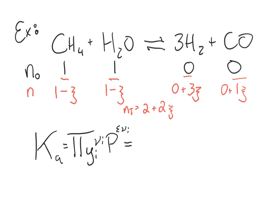So it's all of the y's raised to their stoichiometric coefficients. So that means the products are going to be raised to positive coefficients. So let's see, what's y of hydrogen? Y of hydrogen is 3ξ divided by two plus 2ξ. And then that's going to be cubed. Okay, so that's y of hydrogen. And now we've got to multiply that by y of carbon monoxide. So that's 1ξ over two plus 2ξ. And that is not raised to any power but one.